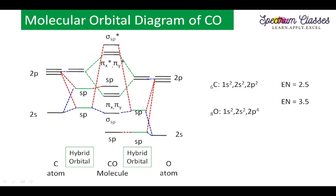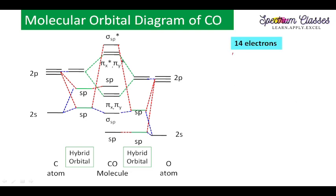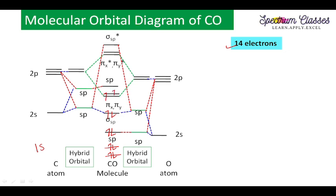Now for filling the electrons: CO has 14 electrons total — 6 for carbon and 8 for oxygen. The 1s atomic orbitals of carbon and oxygen account for 4 electrons (electrons 1–4). Then continuing: electrons 5–8 fill the next orbitals, 9 and 10 go into degenerate orbitals singly first, and electrons 11 through 14 complete the filling.